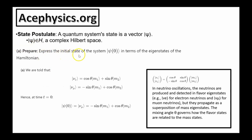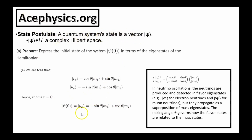Part A says: express the initial state of the system in terms of eigenstates of the Hamiltonian — that's in terms of the mass eigenstates. We know that initially the neutrino is a muon neutrino. So at time t equals 0, the initial state of the system is given by the mixing matrix as negative sine theta times |m1⟩ plus cosine theta times |m2⟩. This is an example of the state postulate: a quantum system's state is a vector psi, and the neutrino's state vector is a linear combination of two mass eigenstates.